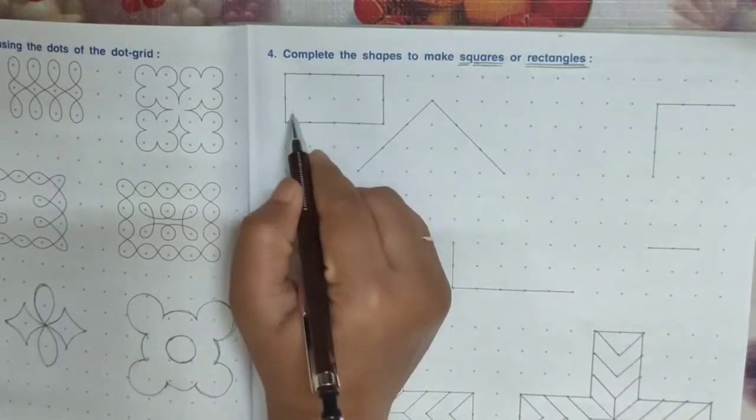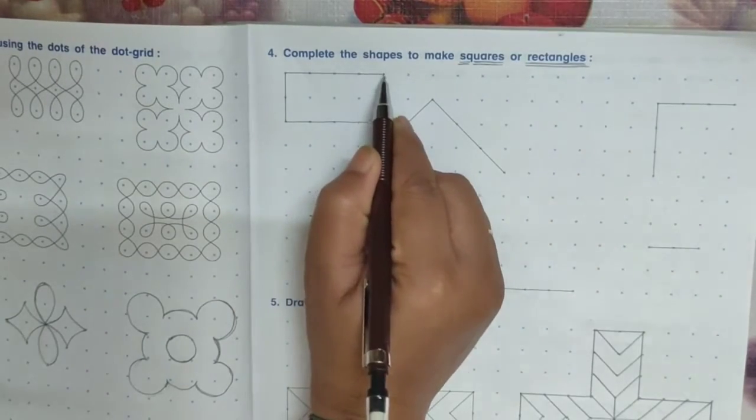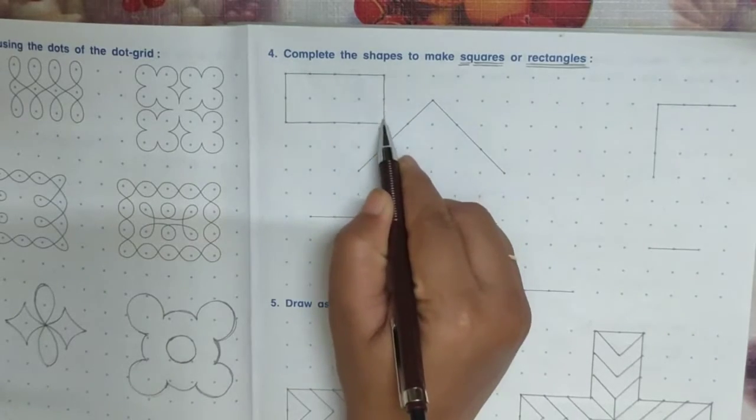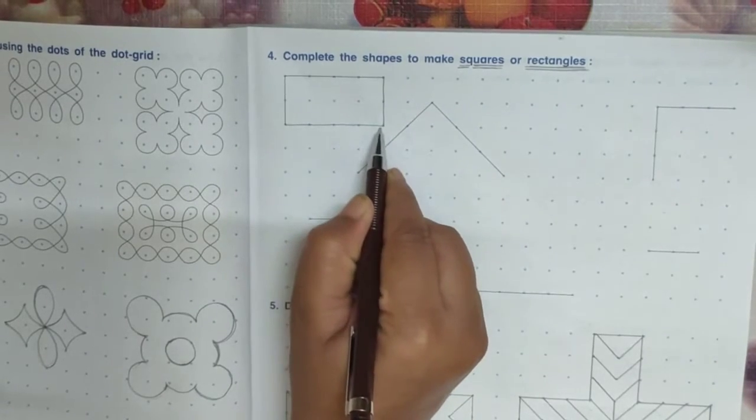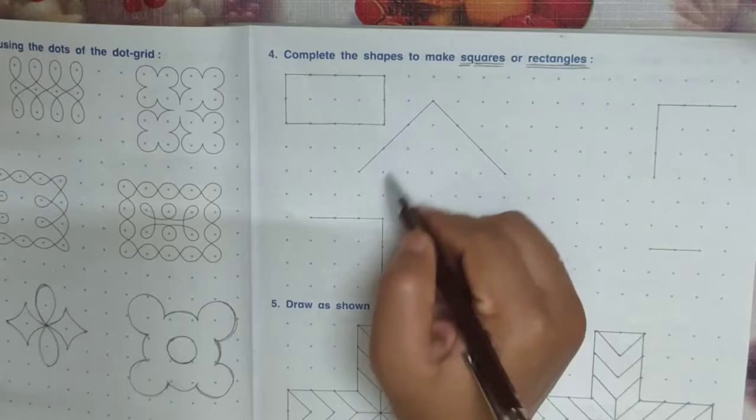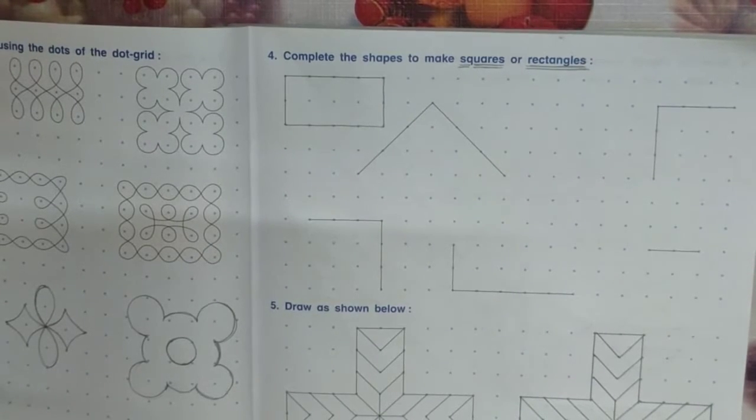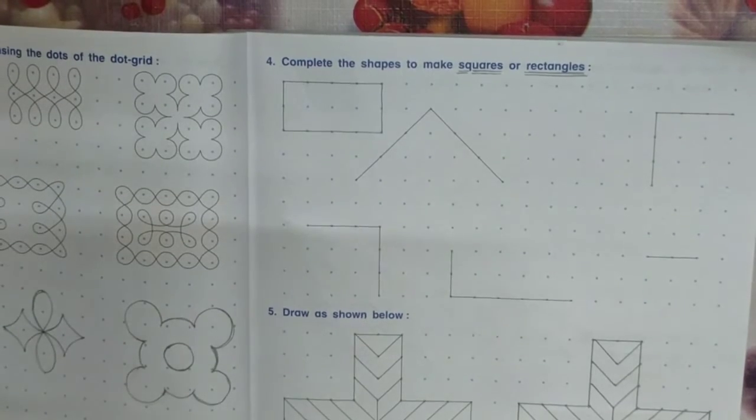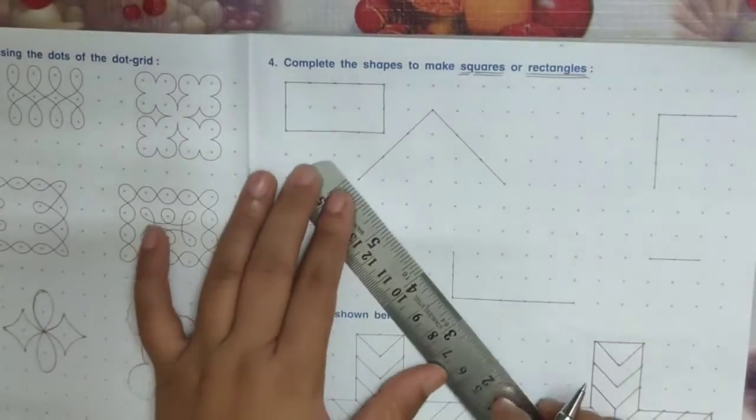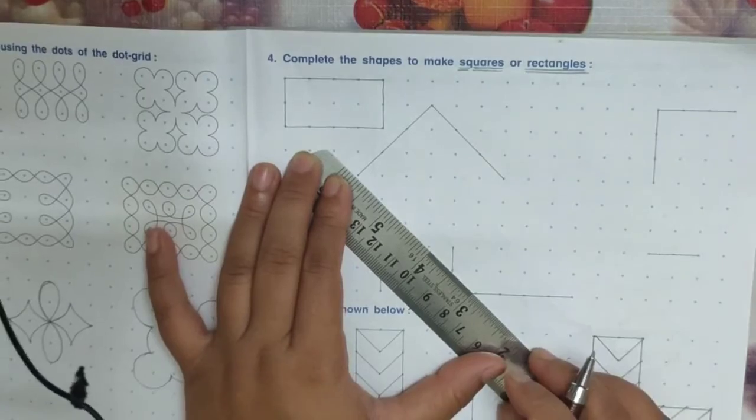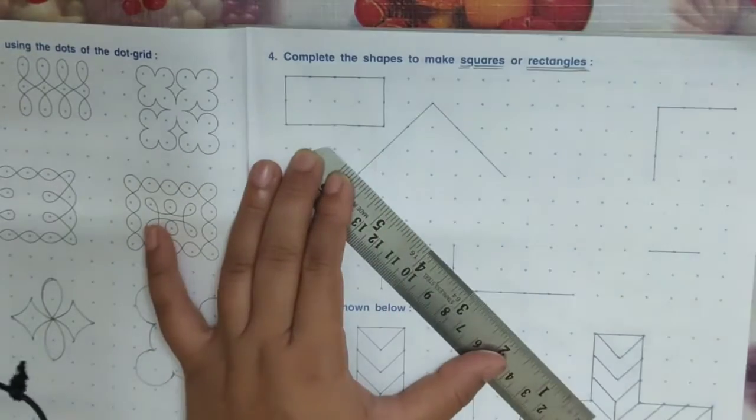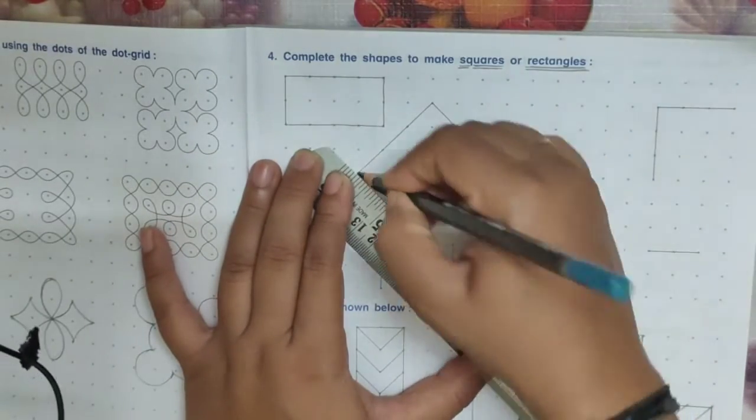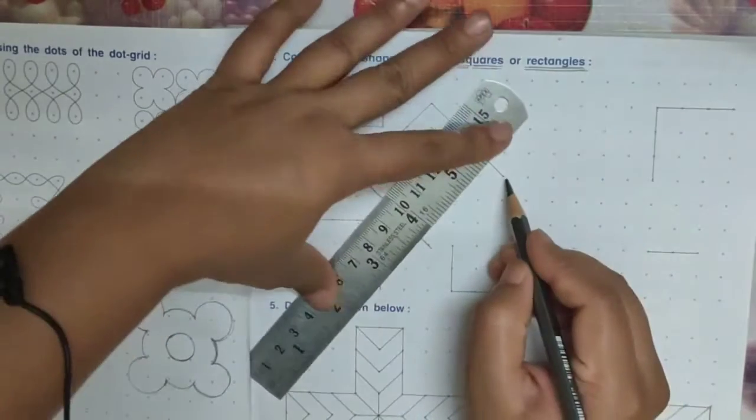Here only this line is given in your book. Here I have drawn this line by using the scale. Similarly, another shape is given. See here, with the use of scale, you have to draw.